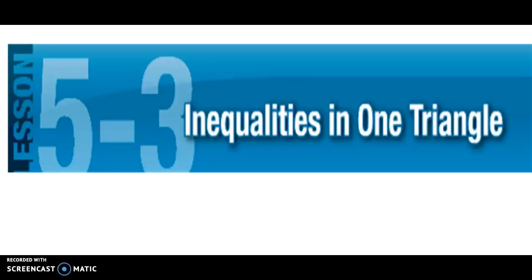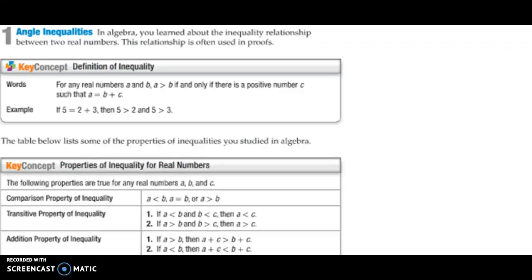Today we're going to be talking about lesson 5.3, which is on inequalities in one triangle. To recap our definition of inequality: if you have some values A and B where A is greater than B, then there's some other value C such that A equals B plus C. For example, since 5 equals 2 plus 3, then 5 is greater than 2 and 5 is greater than 3.